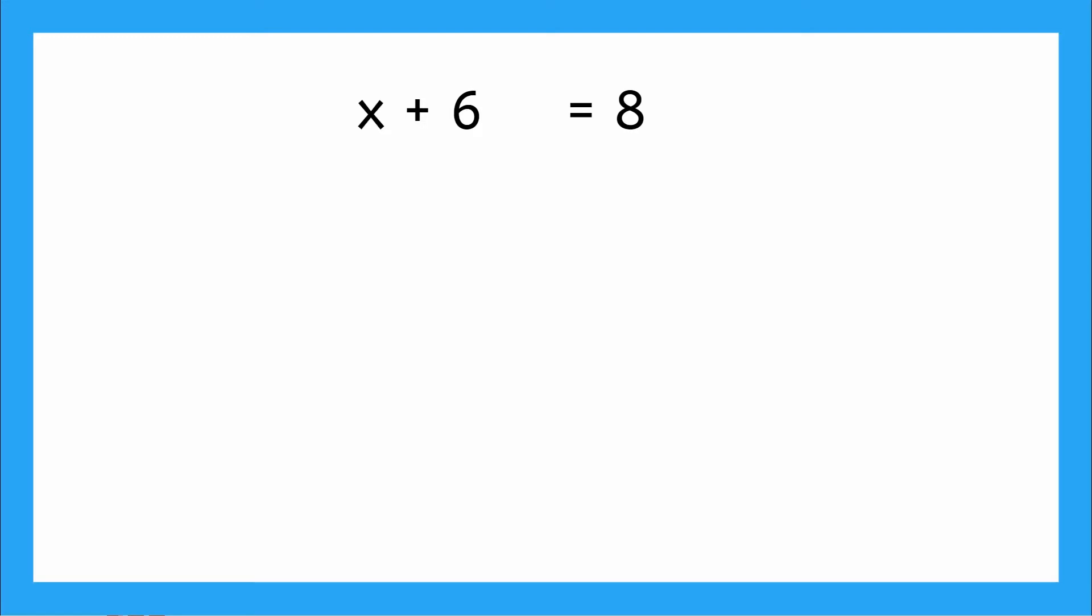So let's just jump right into it. Here we have an equation that says x plus 6 equals 8. And our job is to solve for the x or figure out what number the x is equal to. So to do that, I need to get x all by itself on one side of the equation. How can I get the x alone? Yeah, it looks like I need to get rid of this plus 6.